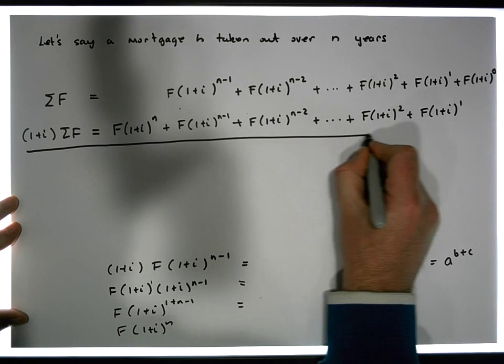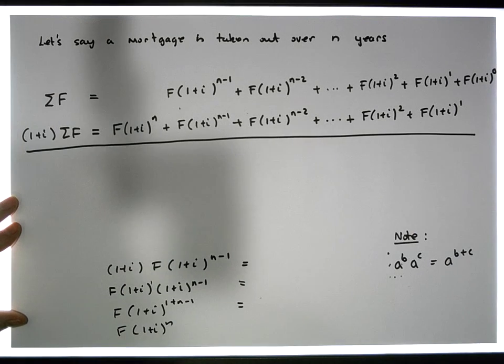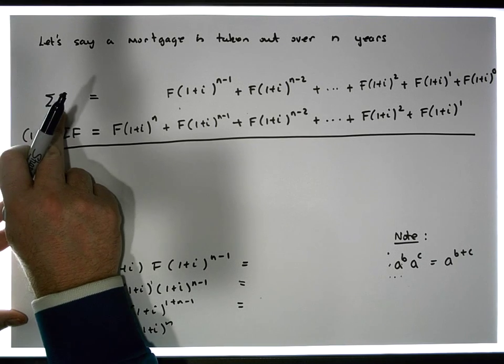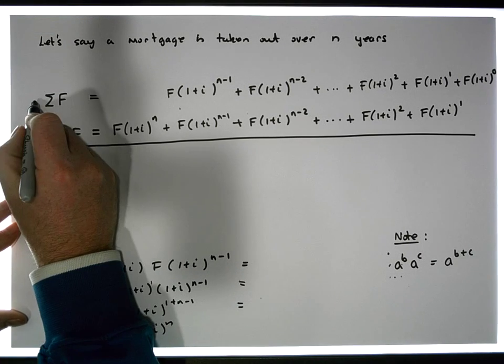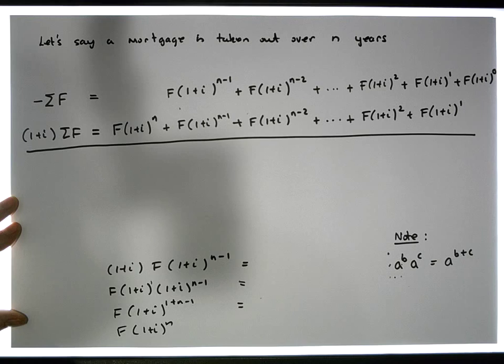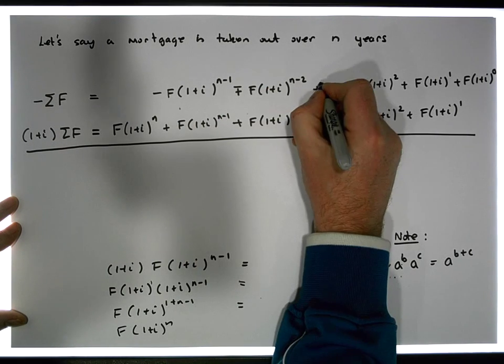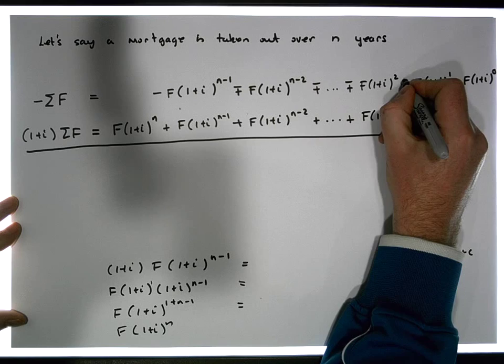Okay, we're gonna sum across these. Actually, what we're gonna do is subtract. Doesn't matter which one we do, but what I'm gonna do is multiply this particular equation by minus one. So this becomes minus the sum of the F's. This'll become a minus, this'll become a minus, this becomes a minus, and these all become minuses all the way down.